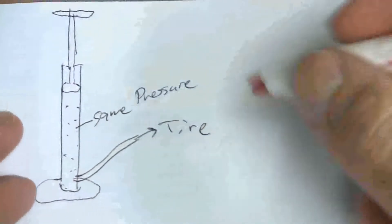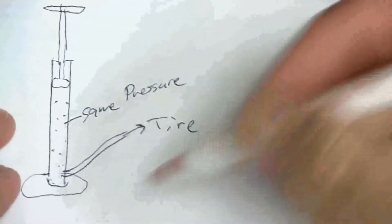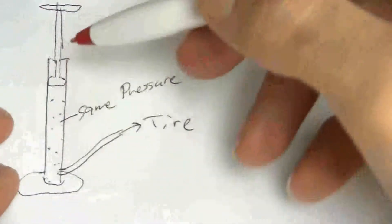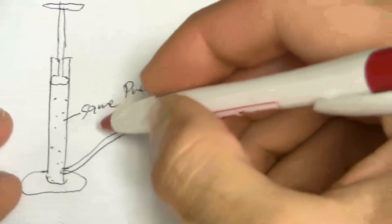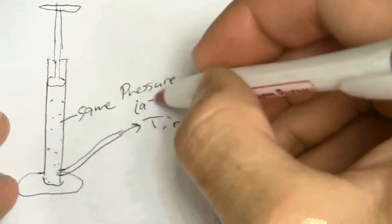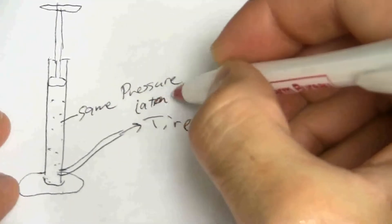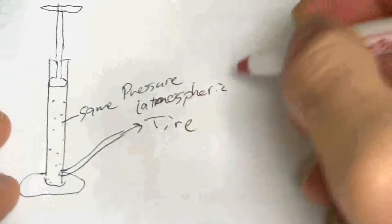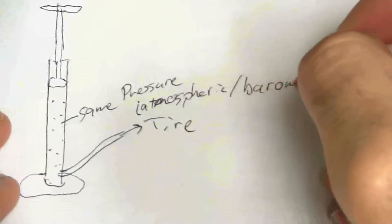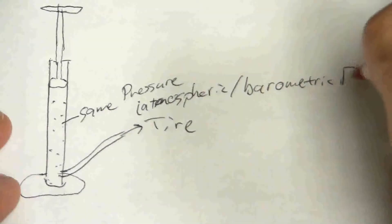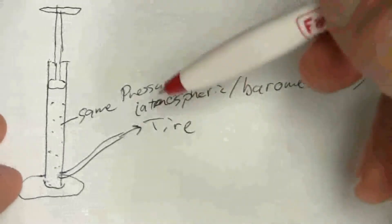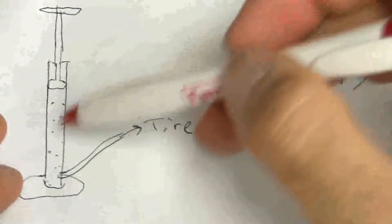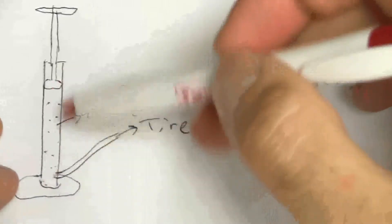So what happens is before, when I just lift up the pump, it's the same pressure as outside or the atmospheric pressure. Another name for atmospheric pressure is barometric pressure. Two similar terms that are used interchangeably, atmospheric or barometric pressure. So the atmospheric pressure is the same as my initial pressure inside.